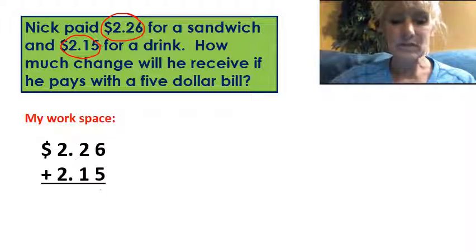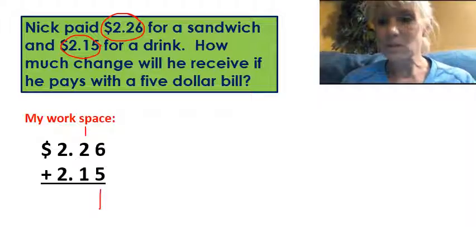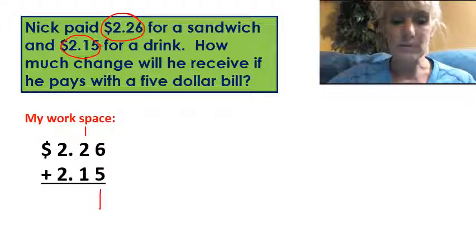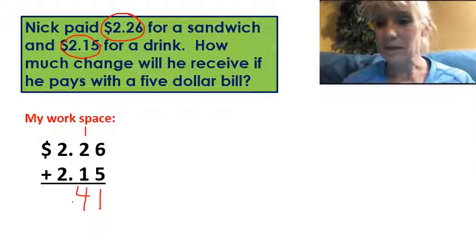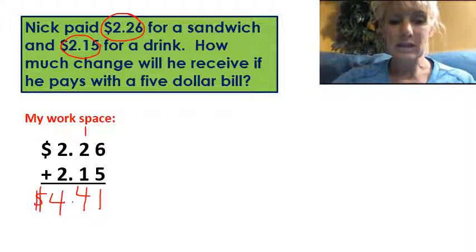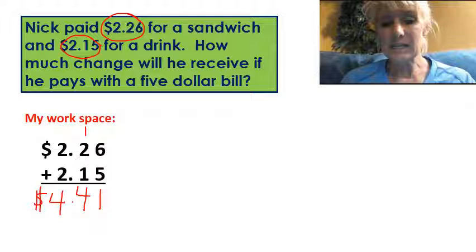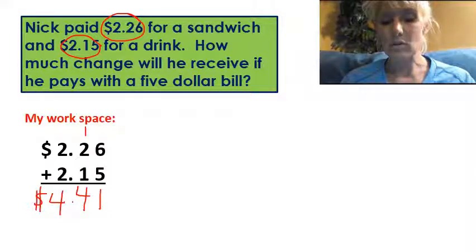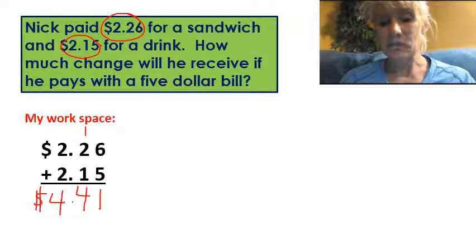Six plus five is eleven. Carry my one. Two plus one is three and one more is four. Drop down your decimal point since we're talking about money. Two plus two is four. So now I know that Nick is going to need to pay $4.41 for the food and drink that he's ordering.